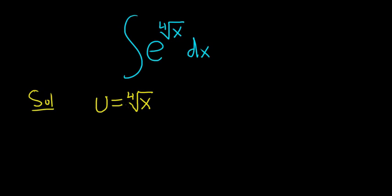Now to make things easier when computing du, we can raise u to the fourth power. So this will be u to the fourth equals x, right? You raise both sides here to the fourth power. And then taking the derivative, that will give us 4u cubed du equals dx.